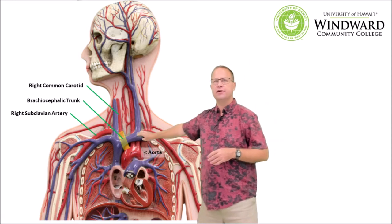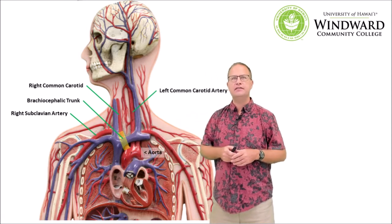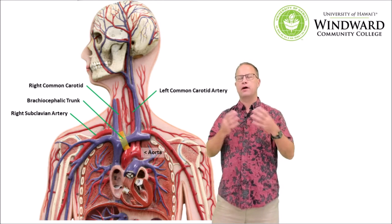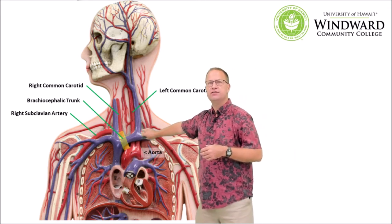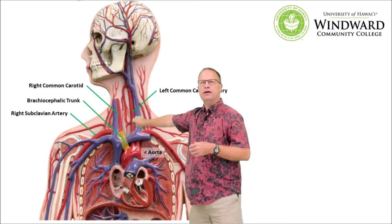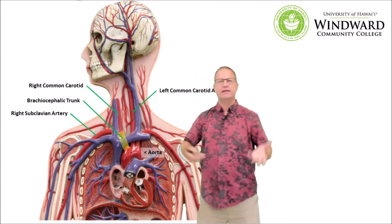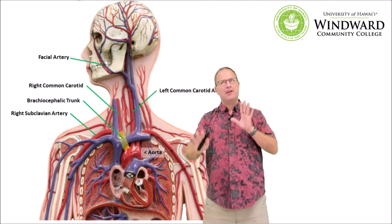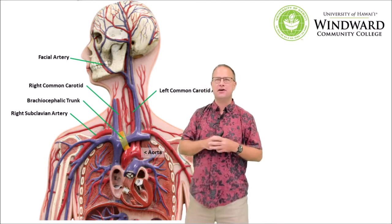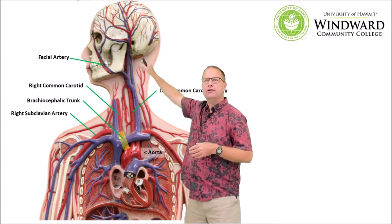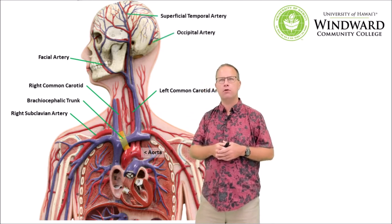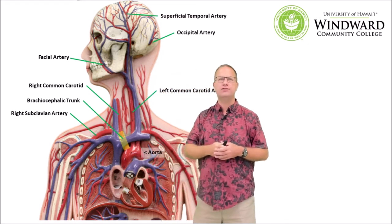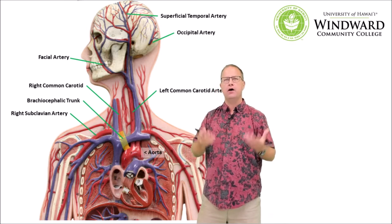The next vessel coming off the aorta is the left common carotid. This is different from the right one because the right came off a brachiocephalic trunk — this one rises directly off the aorta, carrying blood to the head where we have the brain. It will branch into an internal and external carotid. The external carotid eventually becomes the superficial temporal artery, and we also have an occipital branch, as well as a maxillary or facial branch — lots of superficial blood vessels around the face.